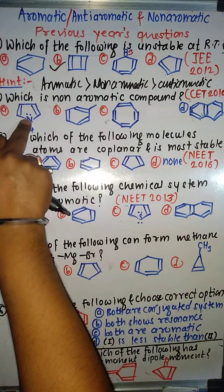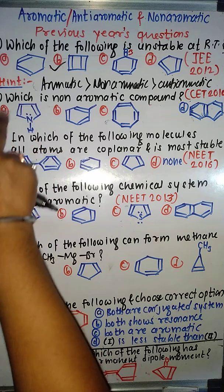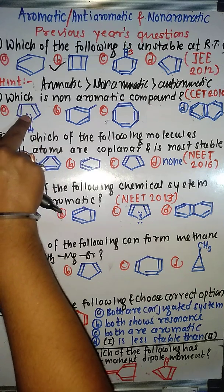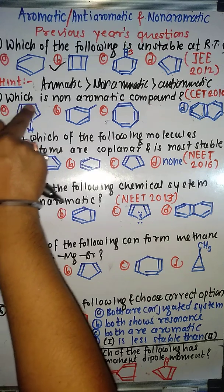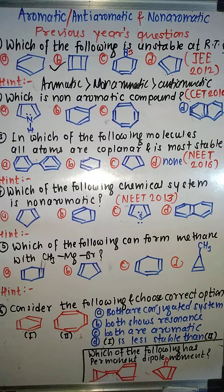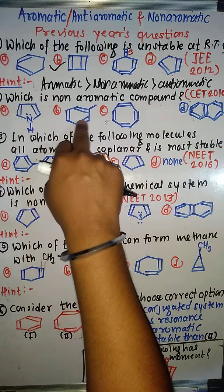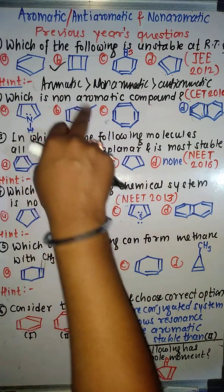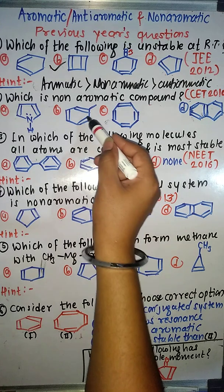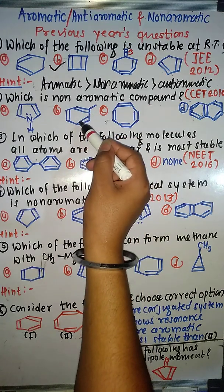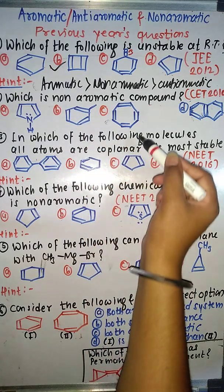Another compound is cyclic, conjugated, planar — here the count is one, two, three pi bonds. Odd means aromatic. Another compound is cyclic, conjugated, planar with an odd number of pi bonds — that means it is also very aromatic.